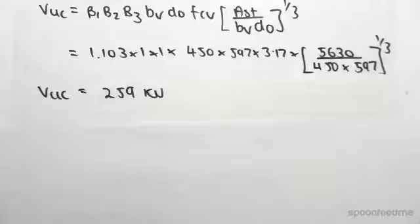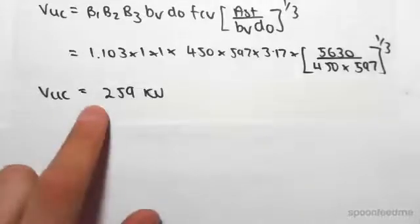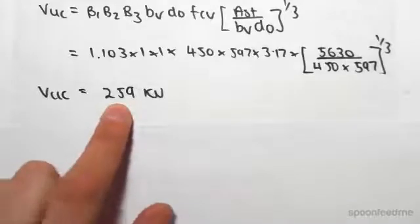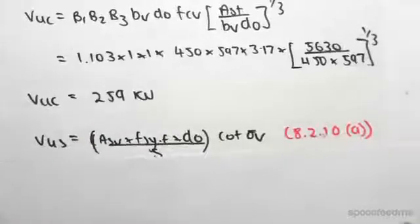Hey guys, I'm just continuing straight on from the previous video. So we found the shear capacity of the concrete to be 259. We now need to find the shear capacity of the steel.